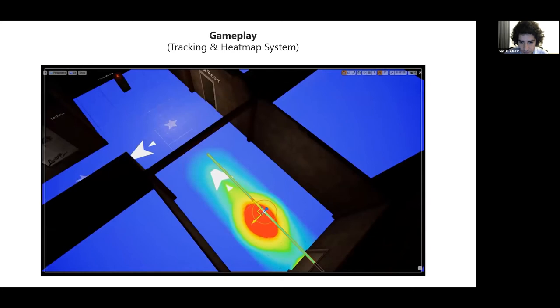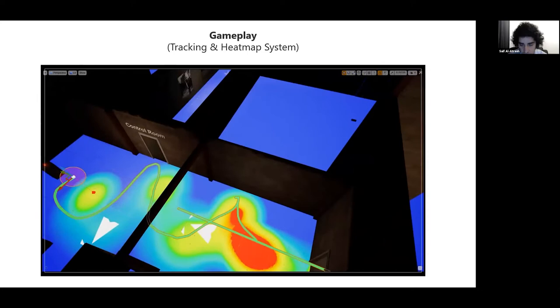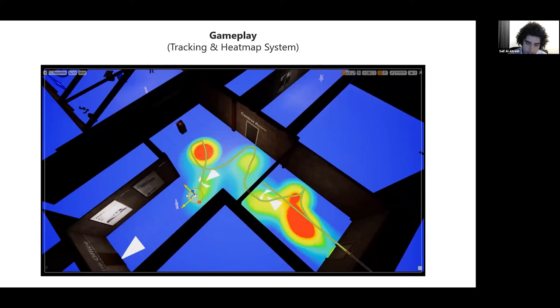In the game, we also managed to create this heat map tracking system, which is already included in the ethics form of the PhD. The player already knows about this. But this also allows us to track the player inside the game, so we can see where the heat points are or where the player is focusing on inside the map and what time he spent the most inside the level.